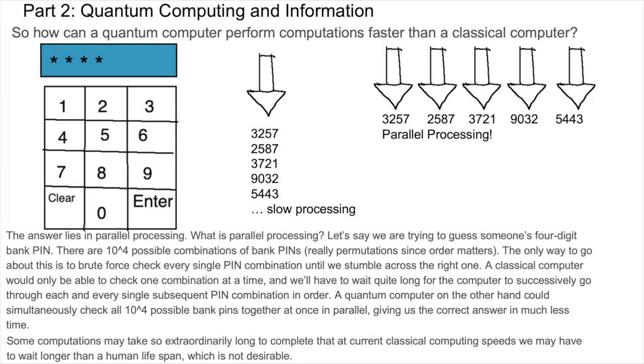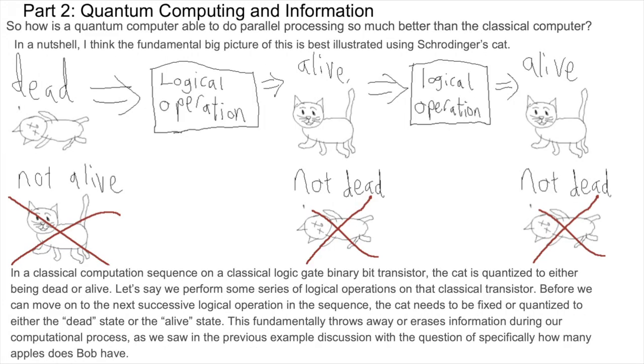Some computations may take so extraordinarily long to complete that at current classical computing speeds we may have to wait longer than a human lifespan, which is not desirable. So how is a quantum computer able to do parallel processing so much better than the classical computer?